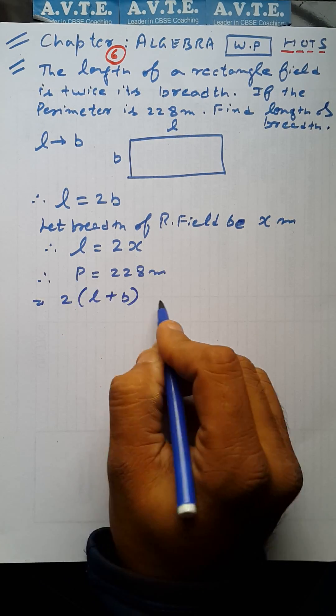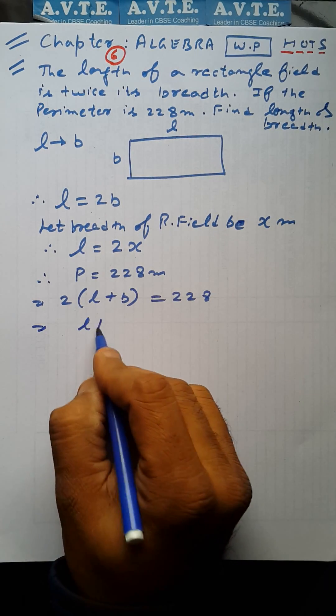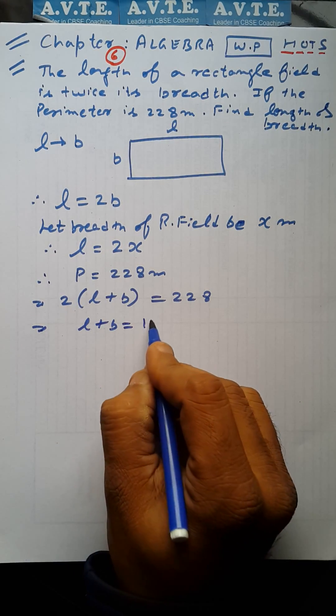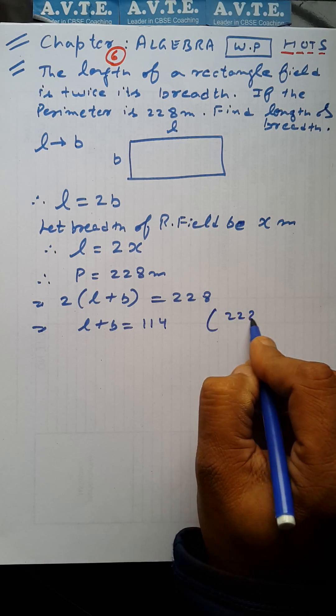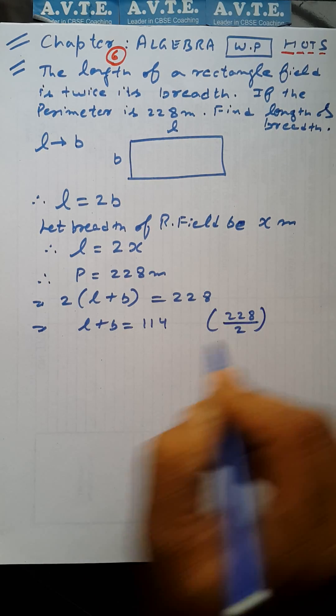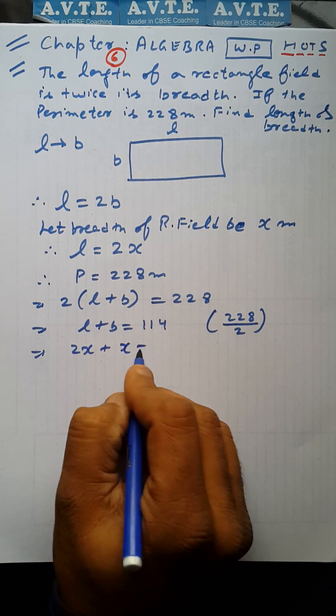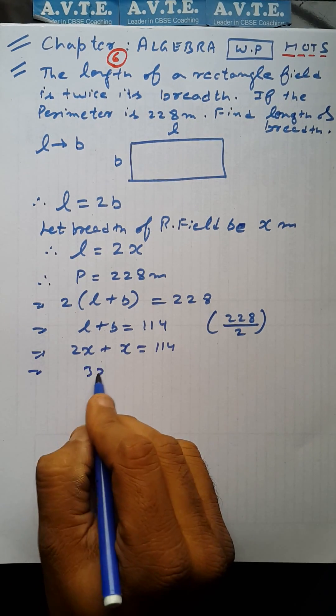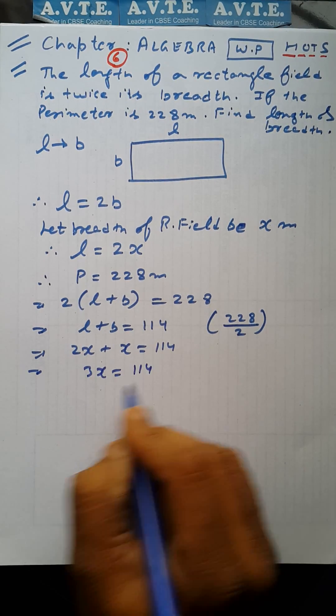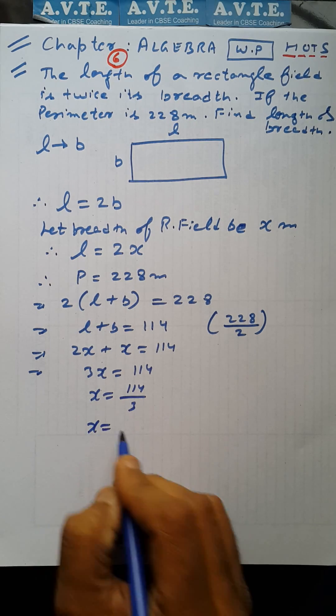2L plus B is 228, means L plus B is 114. We divide 228 by 2. The length is 2x, the breadth is x, and 2x plus x is 3x equals 114. Then x is 114 by 3, then x is 38.